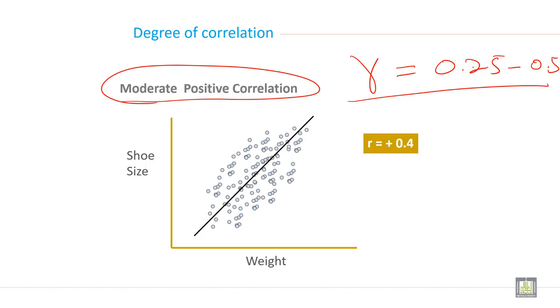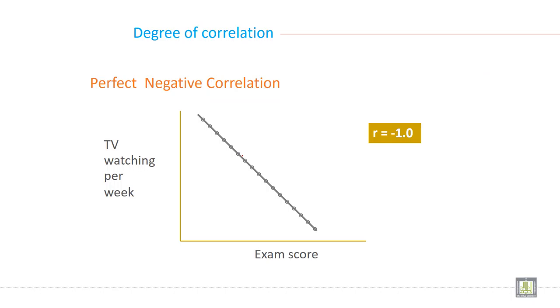So in moderate positive correlation, this dot will go more widely than the positive correlation, high positive, and you can say perfect correlation. This dot goes more wide but in upward direction.